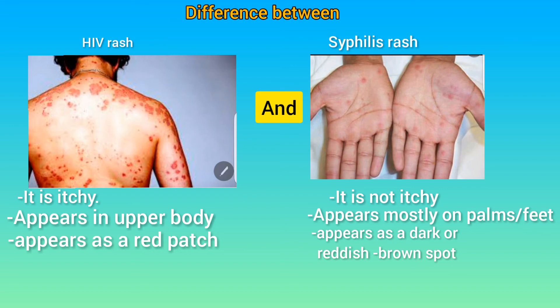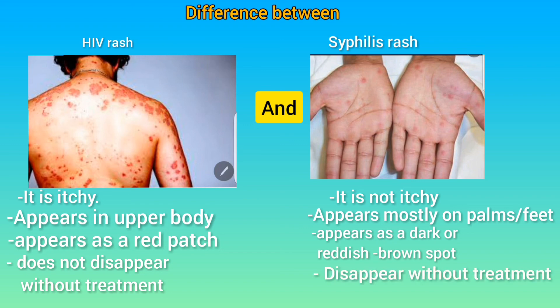The fourth difference is on their duration. HIV rash lasts for a long time and usually does not disappear until treatment is given, while syphilis rash lasts for two to six weeks and disappears without treatment.